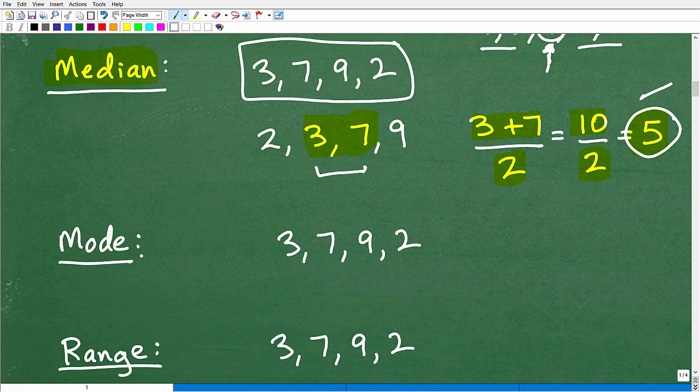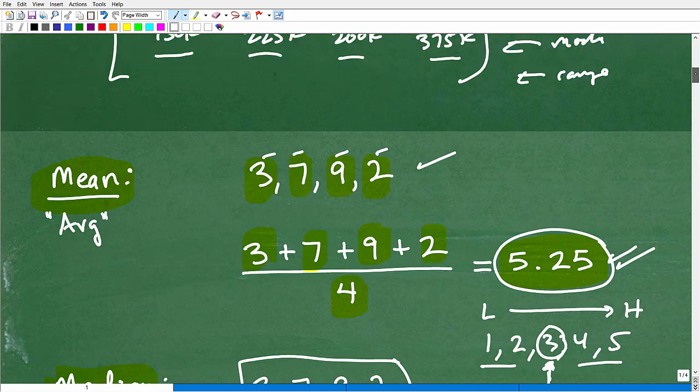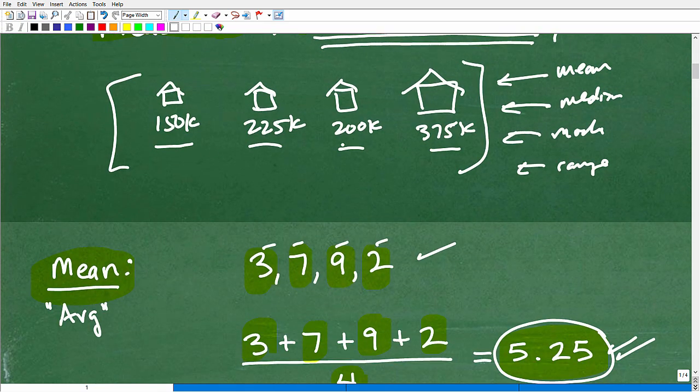So now let's continue and talk about the mode. What is the mode? In this case, there is no mode. The mode - if I had this, let's make the problem 3, 7, 9, 2, and I added another 3, the mode would be 3. What is the mode? The mode is the number that occurs the most. It's the value that occurs the most. And if there is no number that repeats the most, then there is no mode. So here we have no mode.